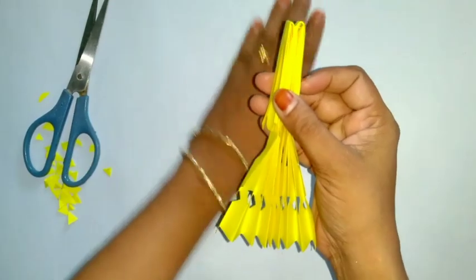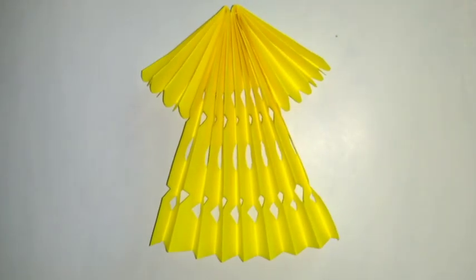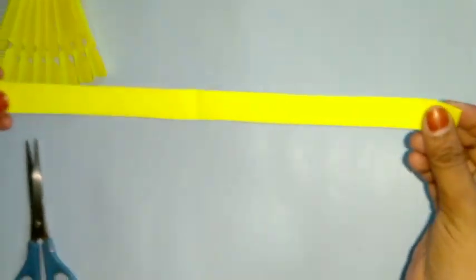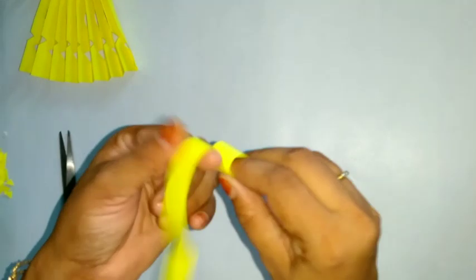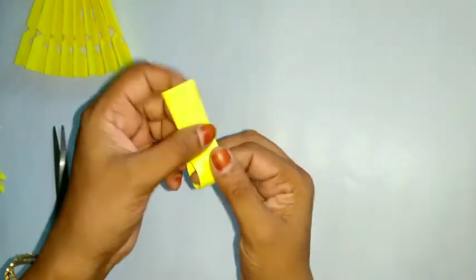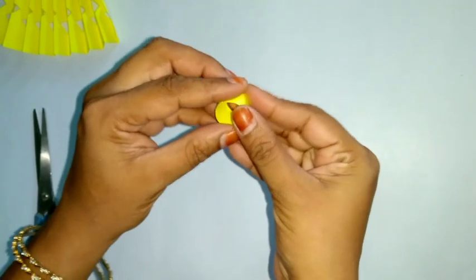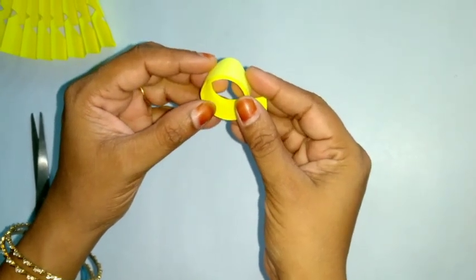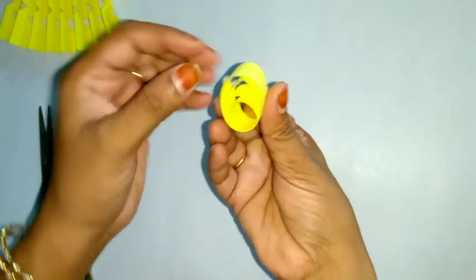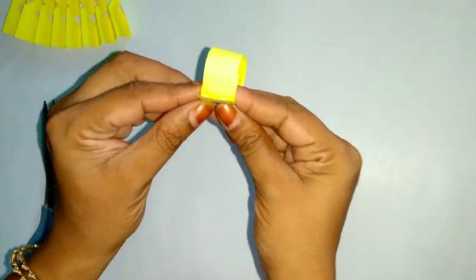So now let us see how to make a head. So we will take a strip of same color and roll it. So like this you need to roll it. So make it loose. Only this portion you can stick like this. So put some glue here and stick it.